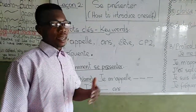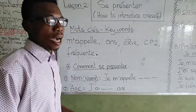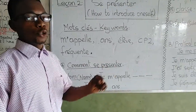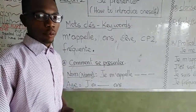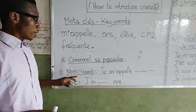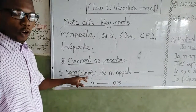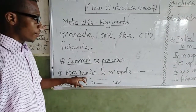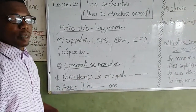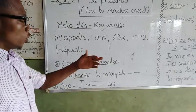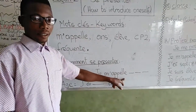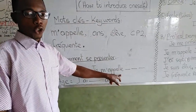Now let's go. How you should introduce yourself — first of all, you have to give your name to the person. How do you give your name in French? You remember from class one: you start with je m'appelle. So if you are Kojo, you say je m'appelle Kojo.